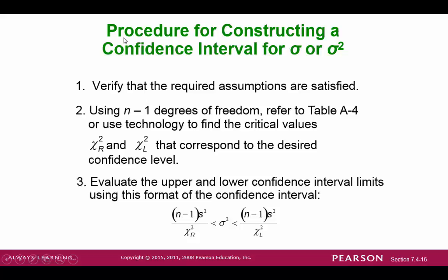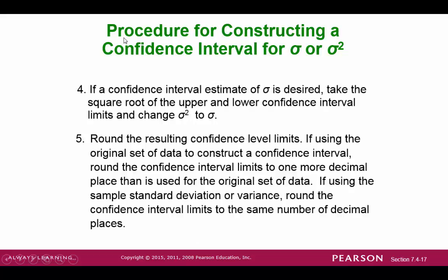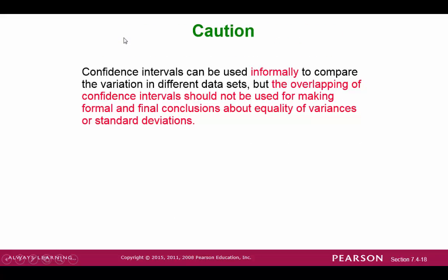Here's a step-by-step process for constructing a confidence interval for the standard deviation or variance. First, verify that all assumptions are satisfied. Then find critical values chi-square R and chi-square L from Table A4. Evaluate the upper and lower confidence limit intervals. If you're looking for the standard deviation, take the square root. Round off the confidence limit values at the very end. A caution: confidence intervals can be used informally to compare variation, but overlapping confidence intervals should not be used for formal conclusions about the equality of variances or standard deviations.